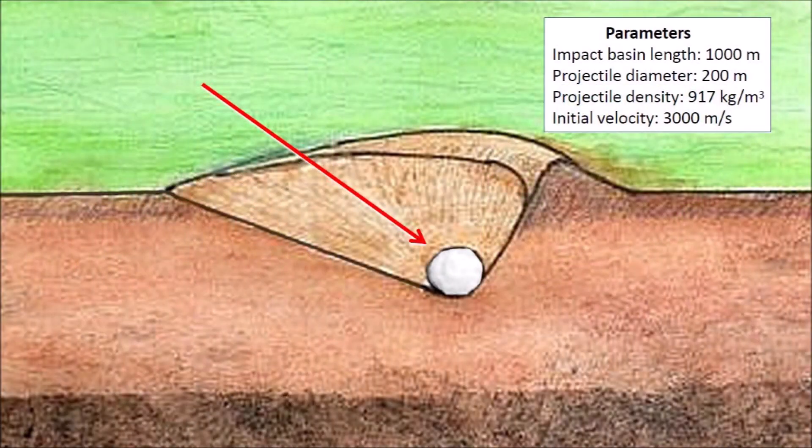Although it is sufficient to have a program that calculates the final result of an impact, it is also interesting to study the detailed mechanism by which an impact basin forms. Today, we are going to calculate the transfer of energy for an ice projectile with a diameter of 200 meters as it penetrates a viscous target with an initial velocity of 3000 meters per second. The projectile has to travel approximately 500 meters before stopping at the apex of the conical cavity.